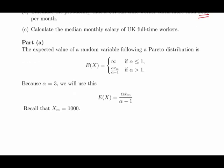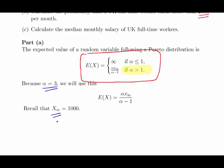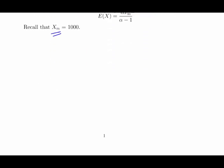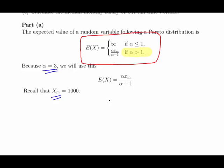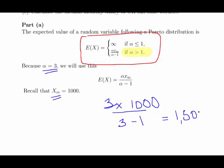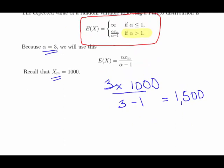The first question asks us for the mean — the expected value of a random variable following the Pareto distribution. The requirement is that alpha is greater than 1, which is the case here. The mean is alpha times XM divided by alpha minus 1. With alpha equals 3 and XM equals 1,000, that is 3 times 1,000 divided by 3 minus 1, which works out to be 1,500.